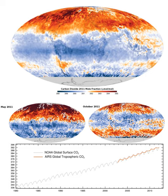Most sources of CO2 emissions are natural and are balanced to various degrees by natural CO2 sinks. For example, the natural decay of organic material in forests and grasslands and the action of forest fires results in the release of about 439 gigatons of carbon dioxide every year, while new growth entirely counteracts this effect, absorbing 450 gigatons per year.